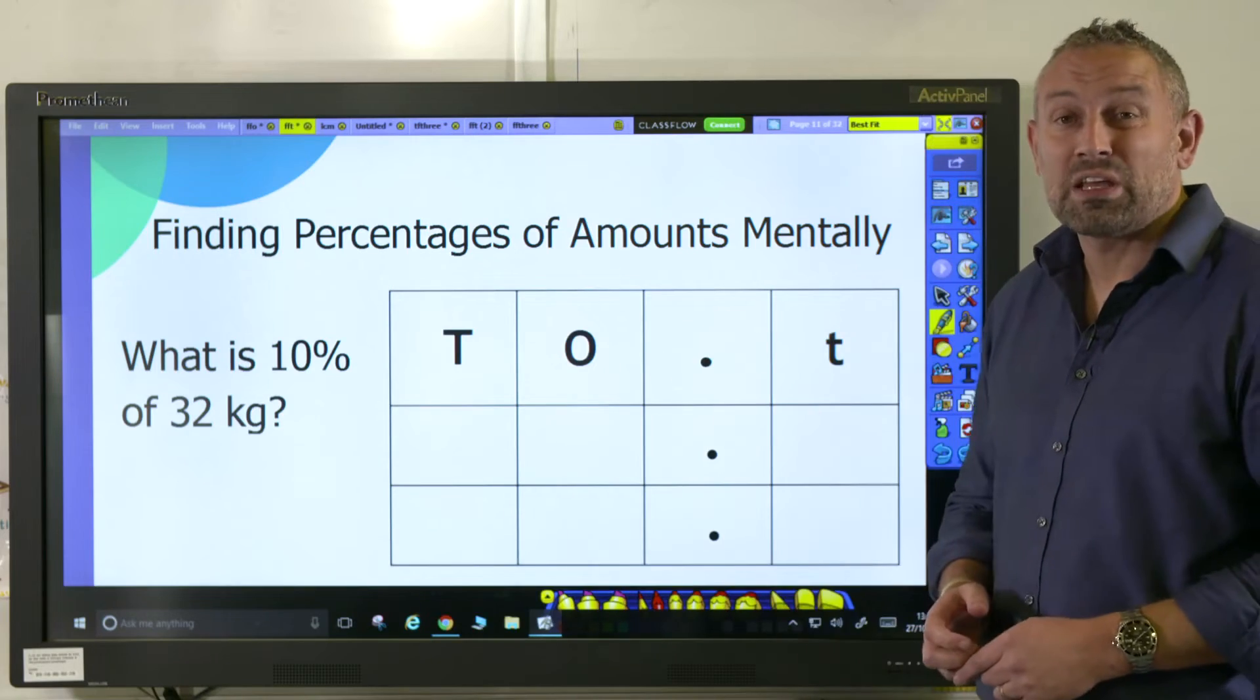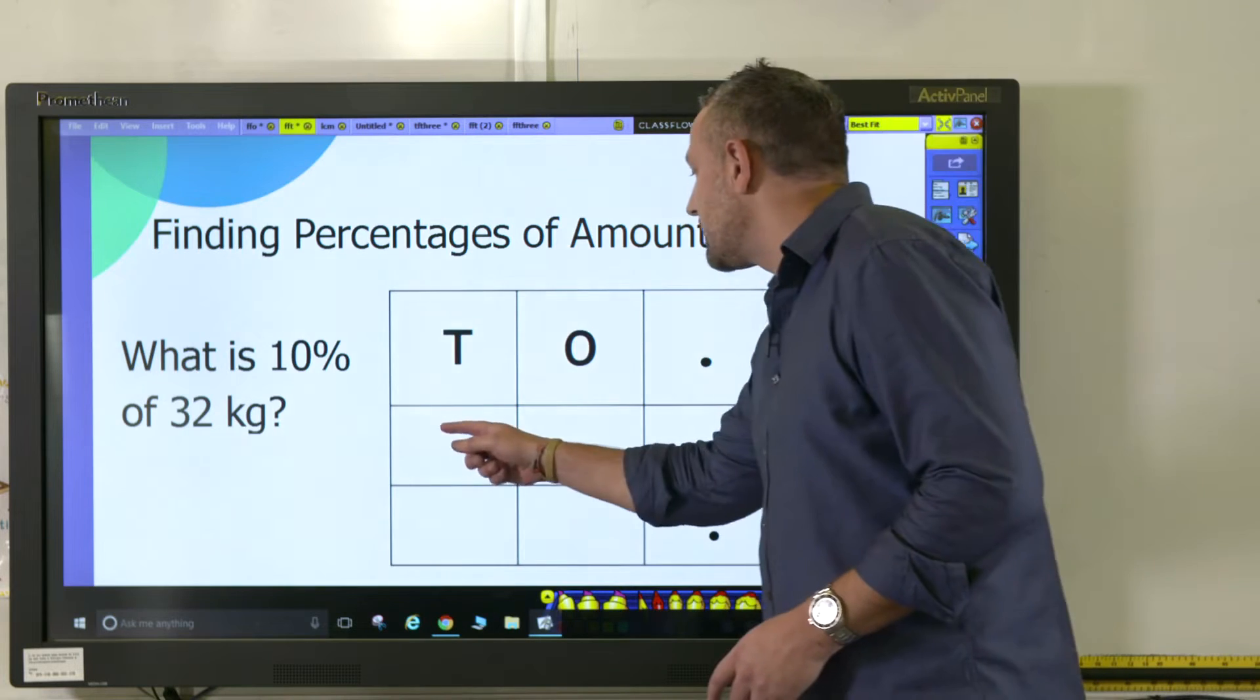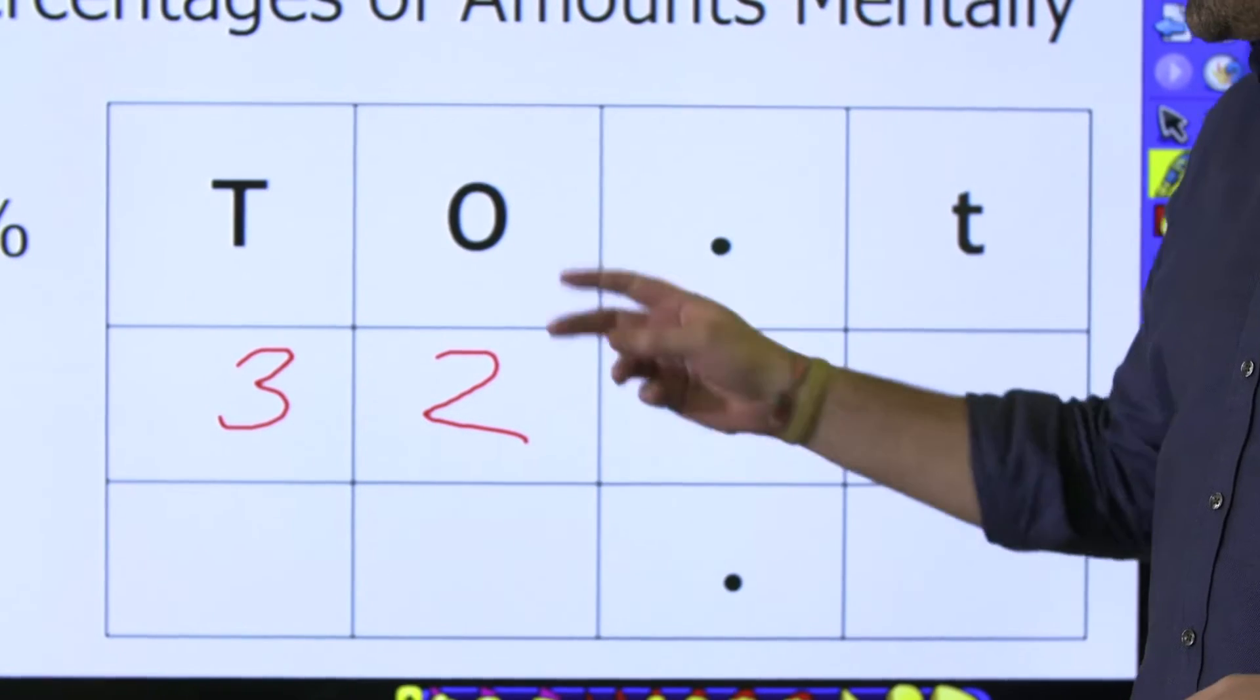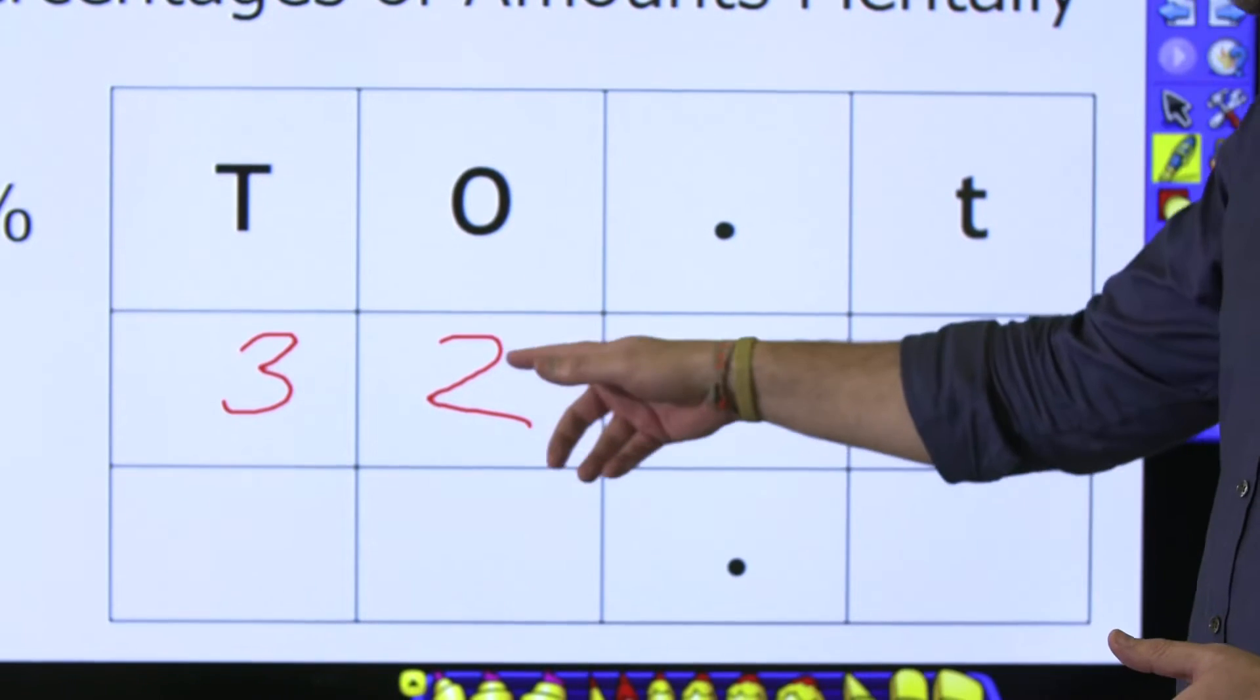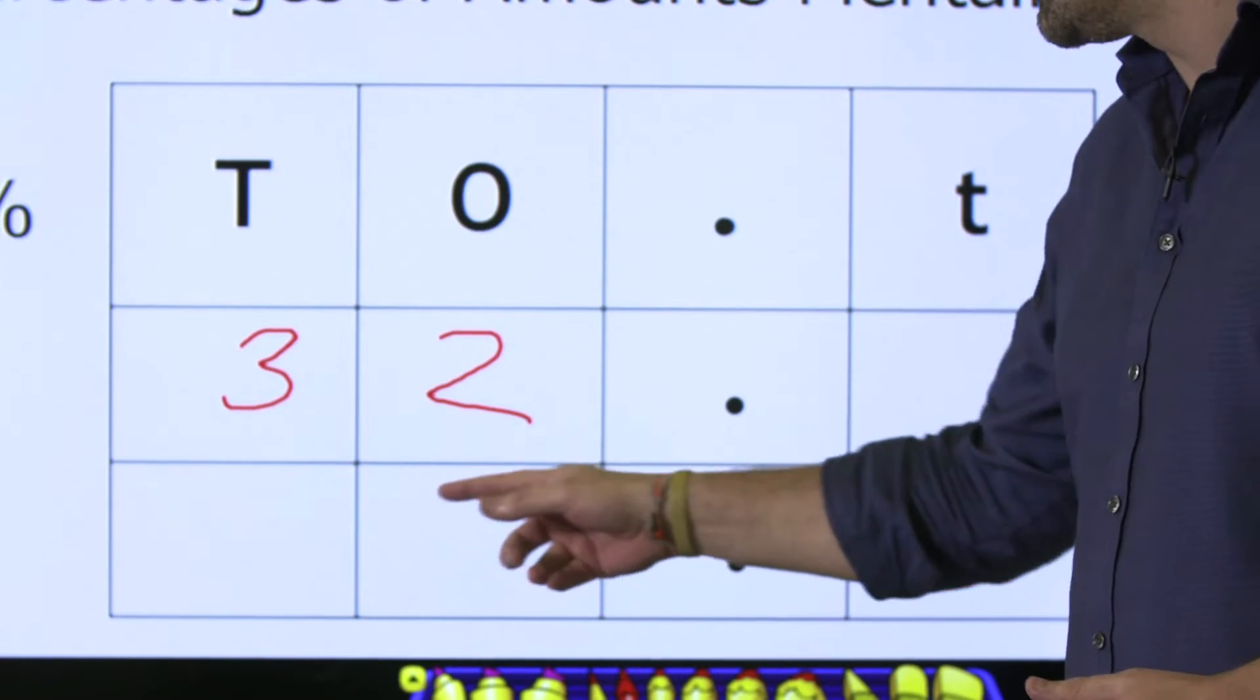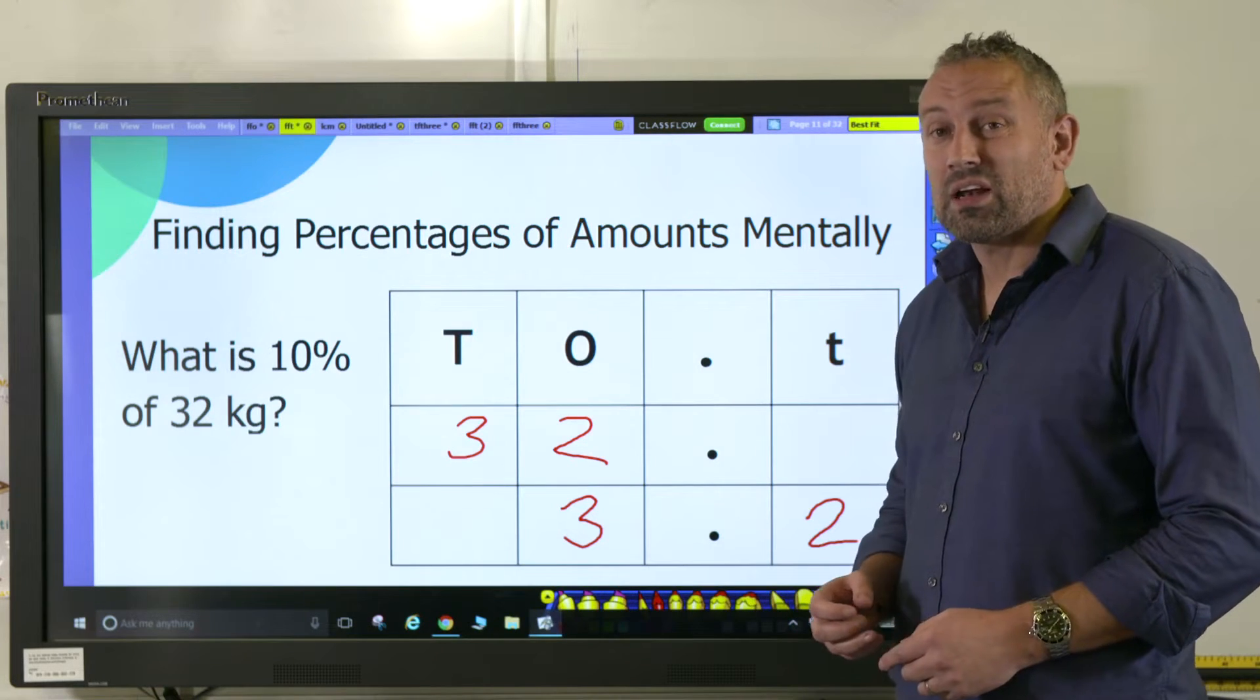We've looked at place value before, and here's our question: What is 10 percent of 32 kilograms? If we write the number 32, we have the three in our tens column and the two in our ones column. When we divide by 10, we move one place value column to the right. The two ones go into the two tenths column and the three tens move into the three ones column, giving us 3.2. So the answer is 3.2 kilograms.